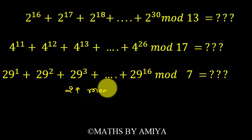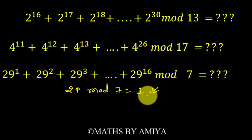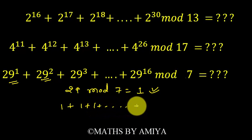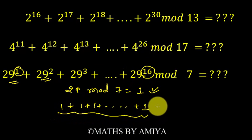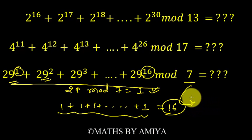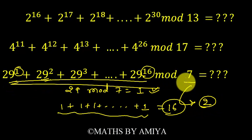Now solve the last question. First check: 29 mod 7 — is the remainder 1? Yes, it is 1. So we cannot apply the consecutive powers concept here. Instead, since 29 divided by 7 gives remainder 1, every power of 29 also gives remainder 1. So the sum is 1 + 1 + 1 + ... for as many terms as there are. The terms from 1 to 16 give 16 ones, which equals 16. Dividing 16 by 7: the remainder is 2. So the complete sequence divided by 7 gives remainder 2.